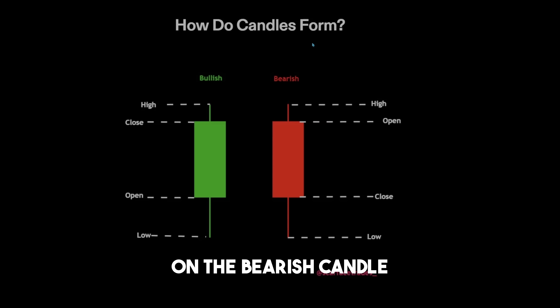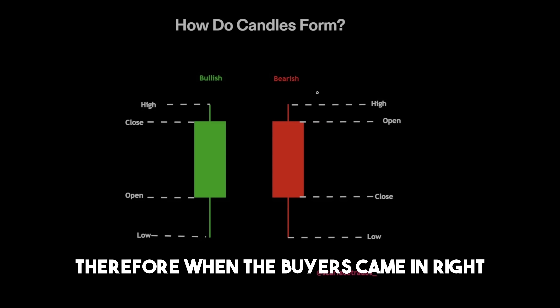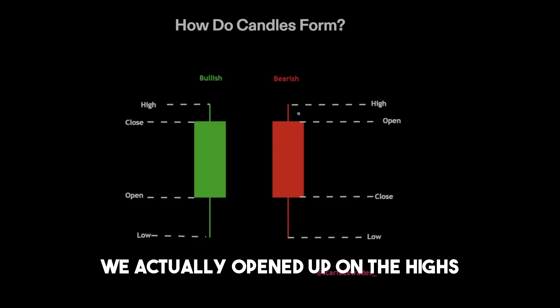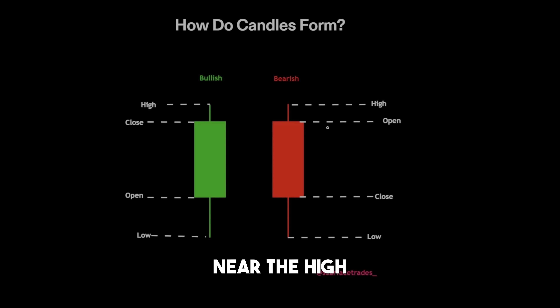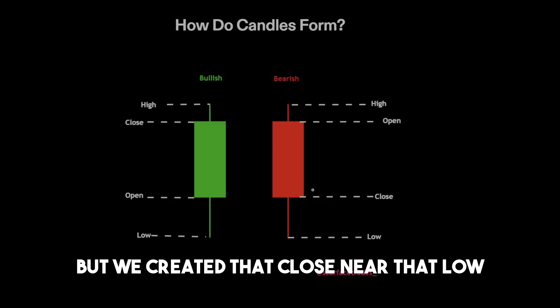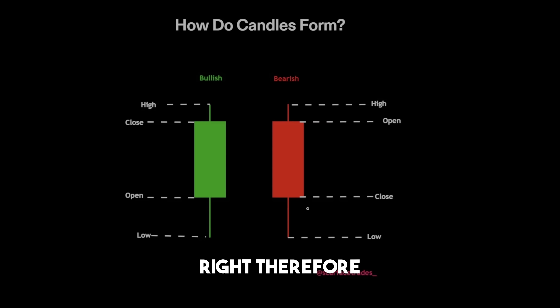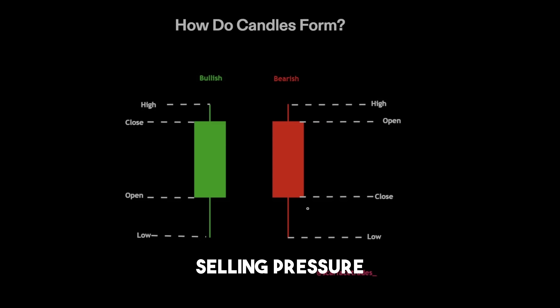Vice versa on the bearish candle — we see that we actually open up near the highs. When the buyers came in, we opened up on the highs, but on this candle sellers became in charge. Near the high when we opened up, sellers brought it all the way down to the low, and we created that close near that low. Therefore, we understand that this candle has more selling pressure.